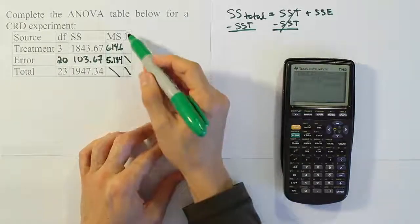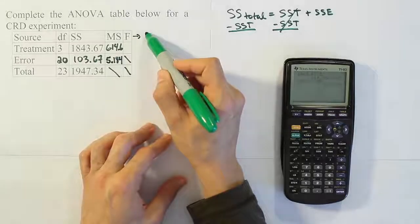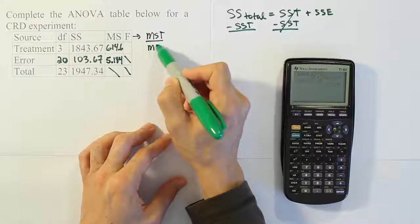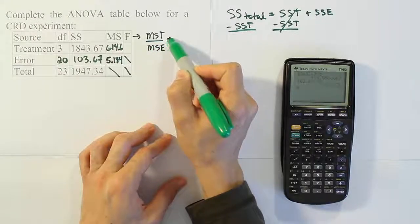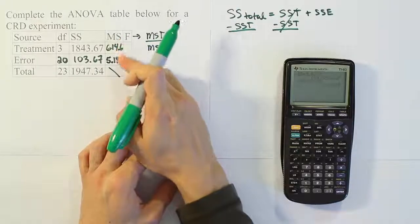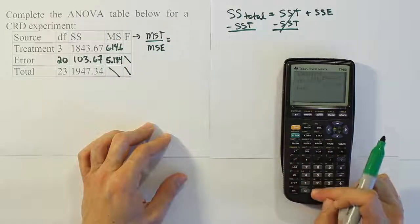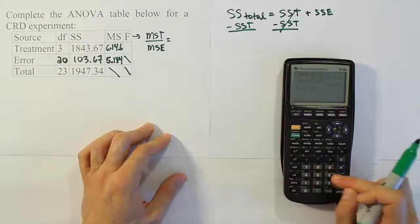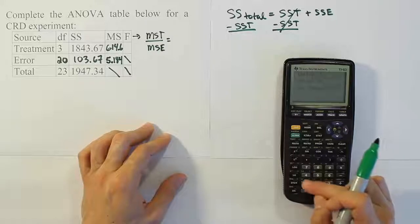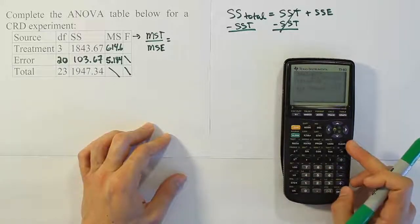And from there, we have to calculate the F value. So let's remember that F is basically the ratio between MST and MSE. And so that ratio will turn out to be for us the ratio between this number and this number. So we need to take the 614.556 repeating and divide it by the 5.1835 value that we had for MSE.